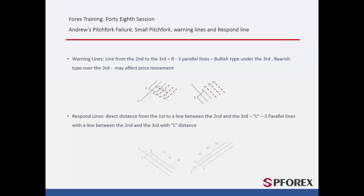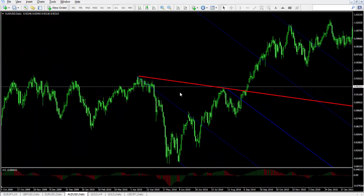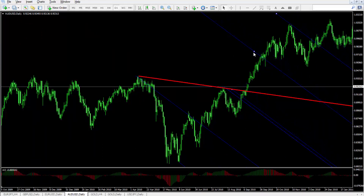Respond Line: If the second and third pivots are connected by a line, then the direct distance between this line and the first pivot can be measured, known as L. It is assumed that a market price would change its trend near these lines. In an example, a pattern was drawn on a downtrend. In the MetaTrader 4 platform, a downward pattern was drawn and the trader could specify warning lines by placing the copy format of the pattern over it, with the first line of the copy pattern on the third line of the main pattern.